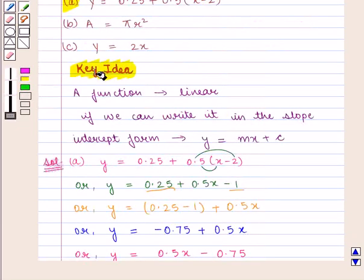From the key idea we know that a function is said to be linear if we can write it in the slope-intercept form, i.e., y = mx + c.